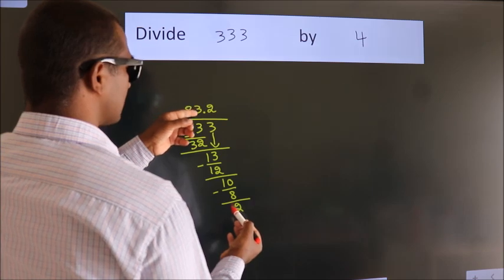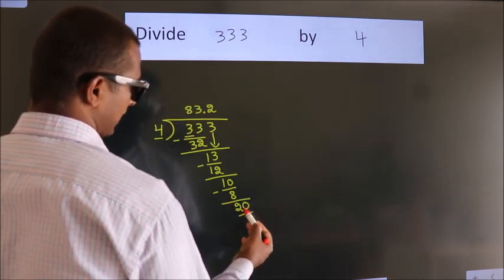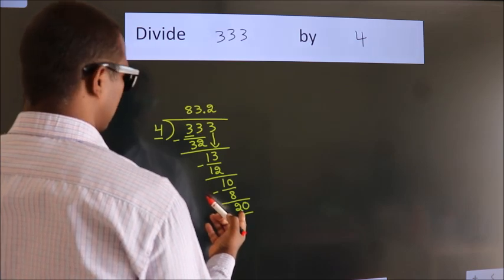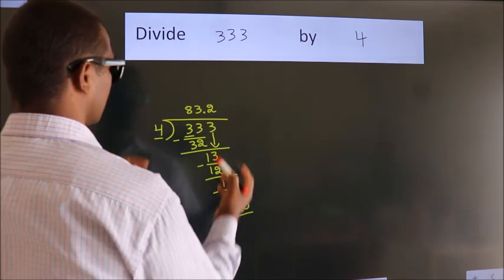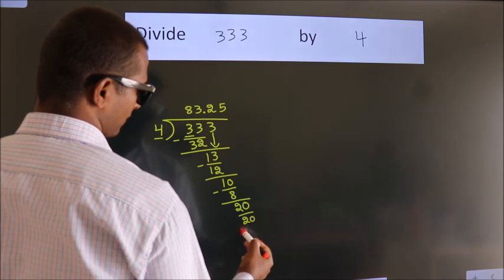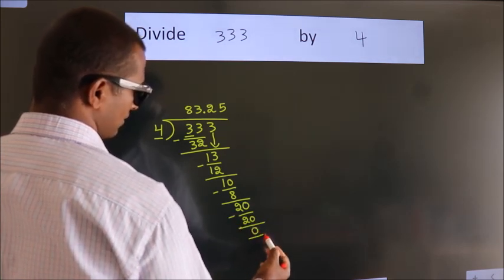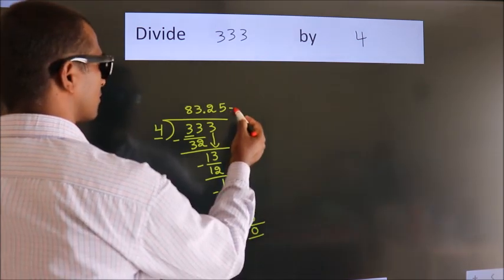After this, we already have the decimal, so directly take 0. So, 20. When do we get 20 in the 4 table? 4 times 5 equals 20. Now we subtract. We get 0. We got remainder 0. So this is our quotient.